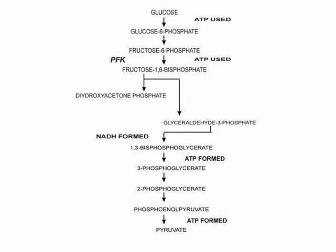Glycolysis literally means splitting glucose. One of the first things discovered about glucose metabolism was that the six carbon structure was split into two three carbon structures, hence the name glycolysis. Glycolysis is sometimes called the Embden-Meyerhof pathway and it's one of the ways that energy in the form of ATP is made in cells.